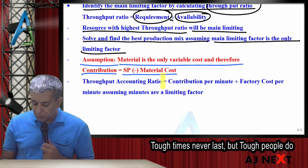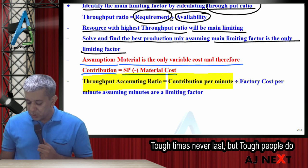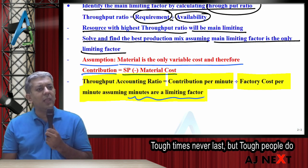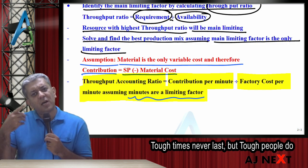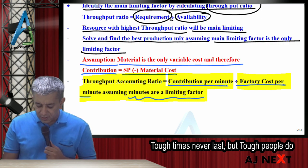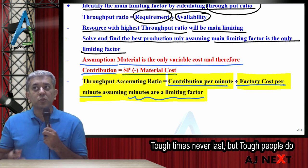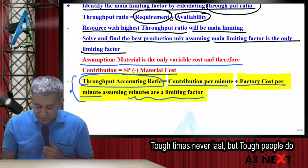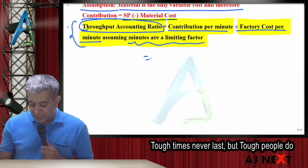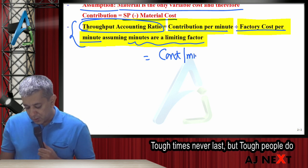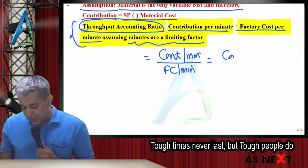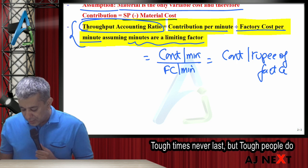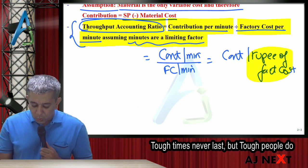One more extra thing — you may be asked about the throughput accounting ratio. How will it be computed? Contribution per minute divided by factory cost per minute, assuming minutes are the limiting factor. If the limiting factor is labor hours, you can convert to hours: contribution per hour divided by factory cost per hour. This gives you contribution per rupee of factory cost — meaning, for every rupee of factory cost you pay, you get this much contribution.